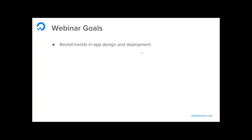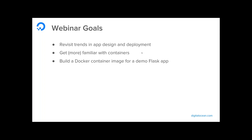Today's goals: I want to revisit trends in app design and deployment — just to set a foundation. Then we'll get familiar with containers, and after that we'll move to Kubernetes. Right before that, I'm going to build a Docker container image from a demo Flask app. Flask is a framework for Python, but don't worry if you don't do Python — the application doesn't matter, it's just something to deploy for the demo.